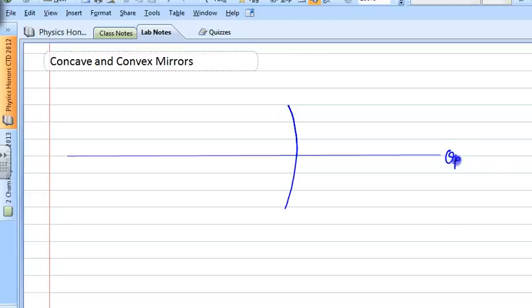And what we do is we entitle this line that cuts it in half. We call it the optic axis. Okay, and this point where the optic axis hits the center of the physical mirror is called the vertex.